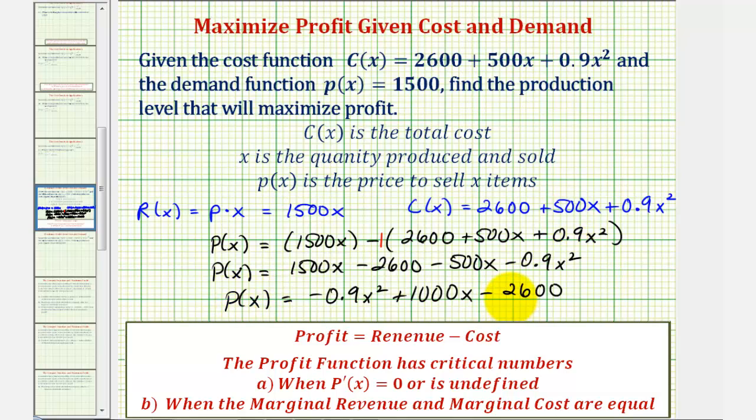Now that we have the profit function, we can determine the production level, or the value of x, that will maximize the profit. The first step is to find the critical numbers of the profit function. One way is to determine where the first derivative is equal to zero or undefined. The second method would be to determine when the marginal revenue and marginal cost are equal. Let's determine where the first derivative is equal to zero or undefined.